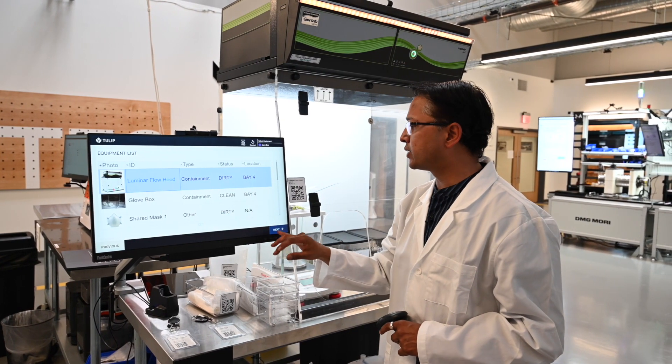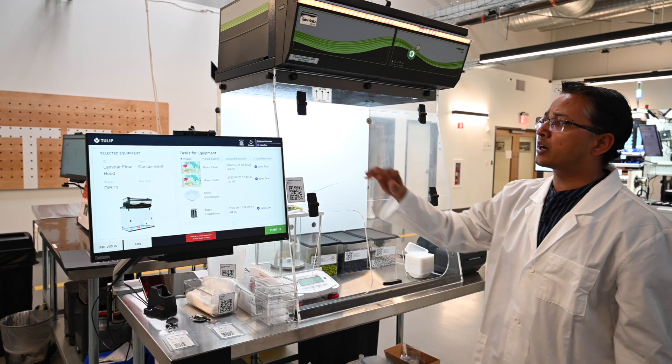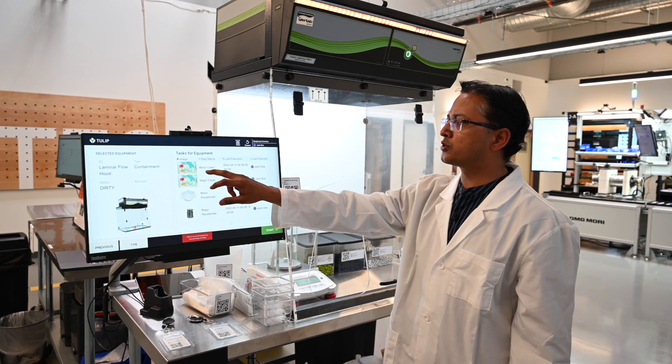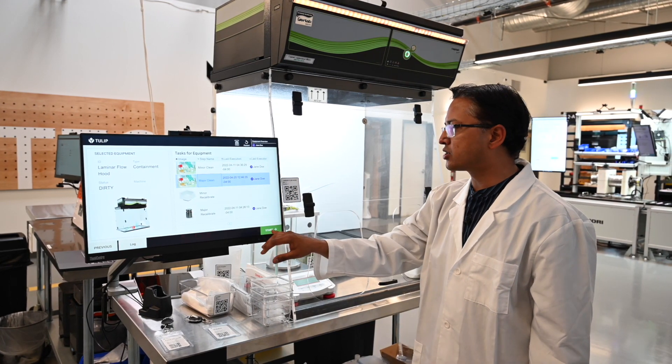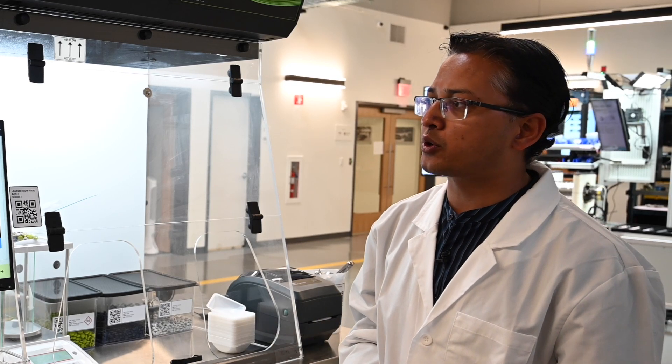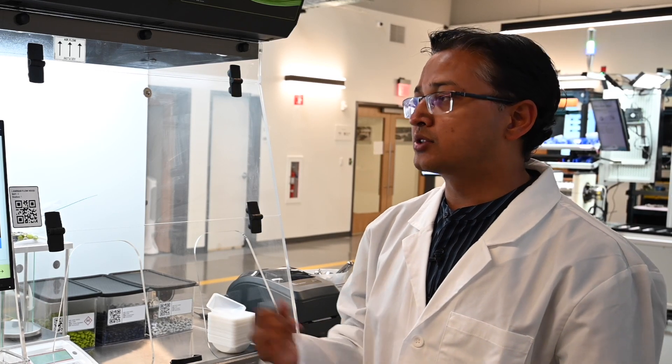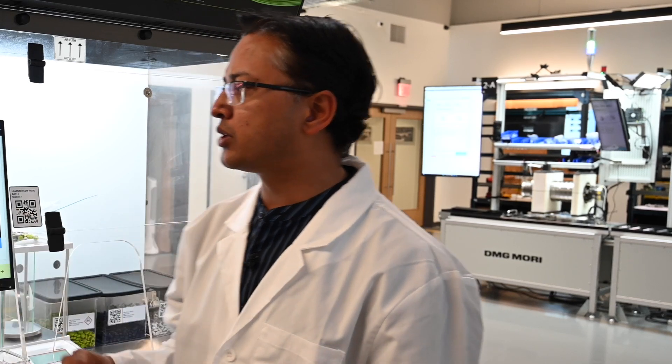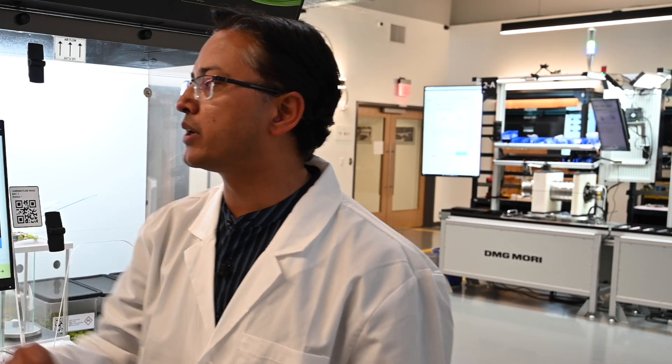So I'm able to select one of these equipments. I can see what kind of processes I can execute. So if I try to do a major clean, the application will show me the instructions for major clean process as well. So I can create checklists to ensure that the operators are completing these before they can actually move on and submit their work.